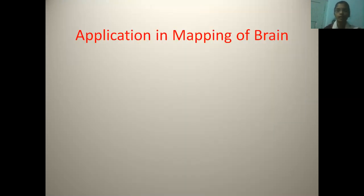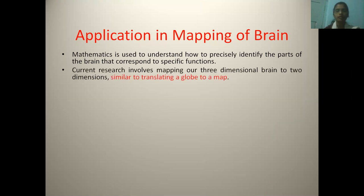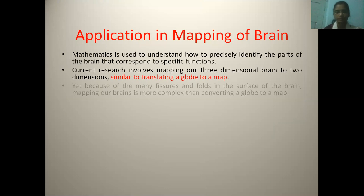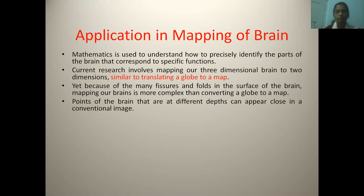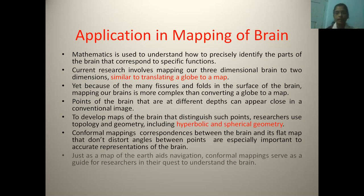Going to the applications in mapping of the brain. Mathematics is used to understand how to precisely identify the parts of the brain that correspond to specific functions. Current research involves mapping of a three-dimensional brain to two dimensions, similar to translating a globe to a map. Yet, because of many features and folds in the surface of the brain, mapping our brain is more complex than converting a globe to a map. Now, points of the brain at different locations can appear close in conventional images. Such points on the brain can be distinguished by using topology and geometry, including hyperbolic and spherical geometry.